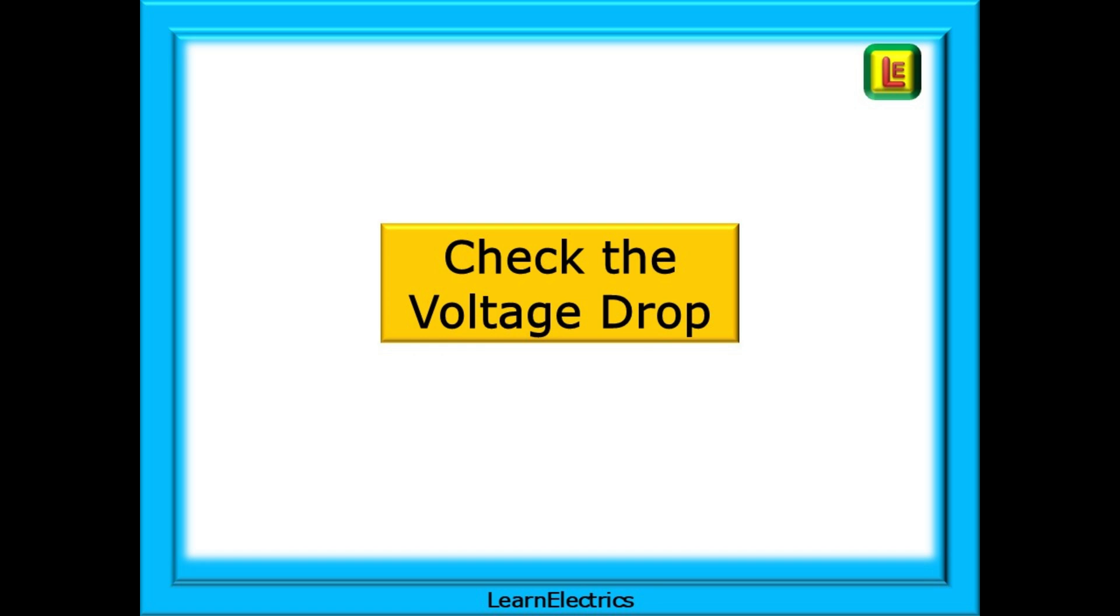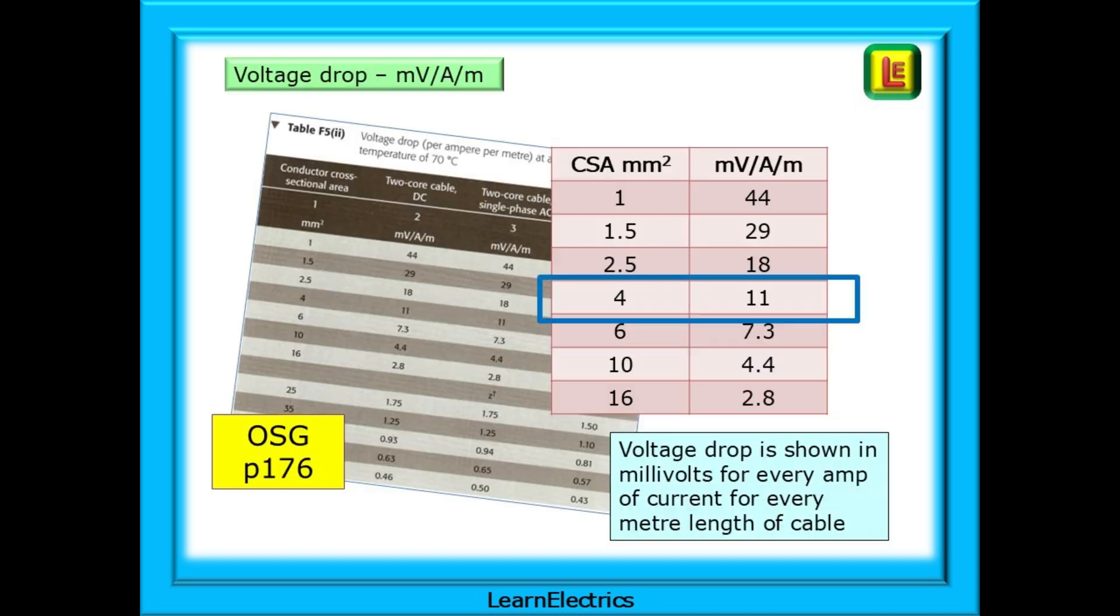It's important that we check the voltage drop before installing the cable. We need to be certain that sufficient voltage will be present at the load, the heater in this case, to allow the heater to function correctly. Any voltage drop is lost in the cable, and the customer is paying for lost energy and not heating the house most efficiently. Voltage drop is measured in millivolts per amp per metre, and we will convert this back to volts in the calculation.